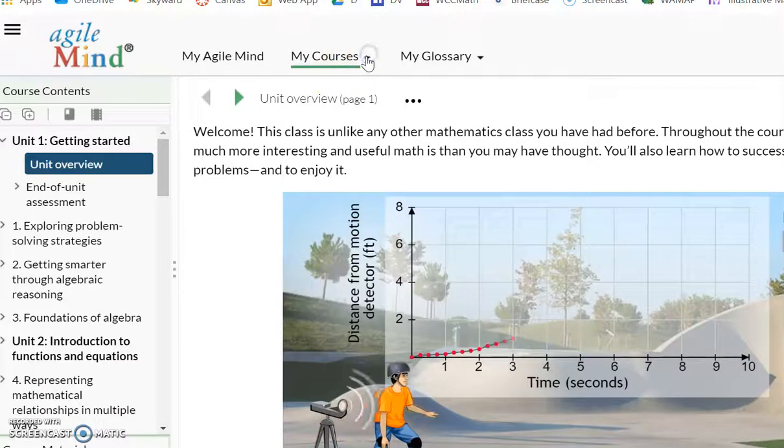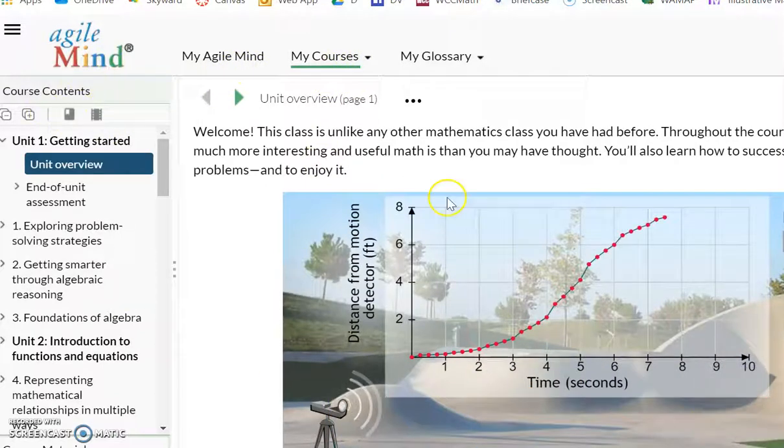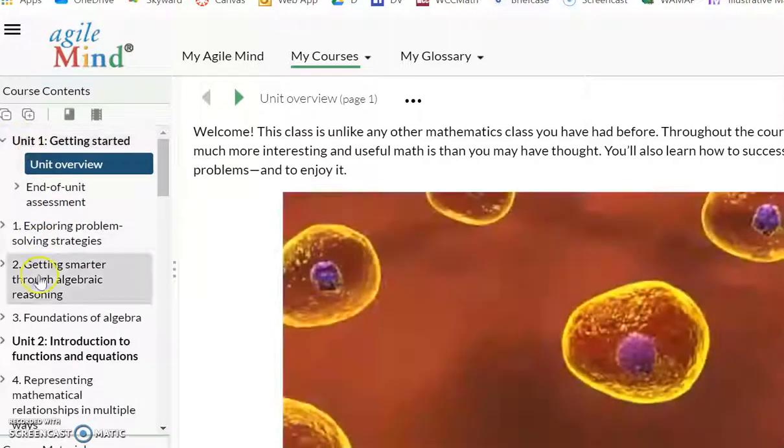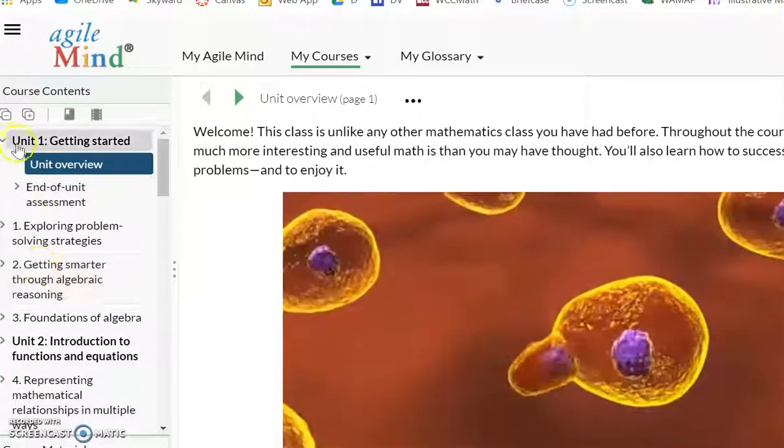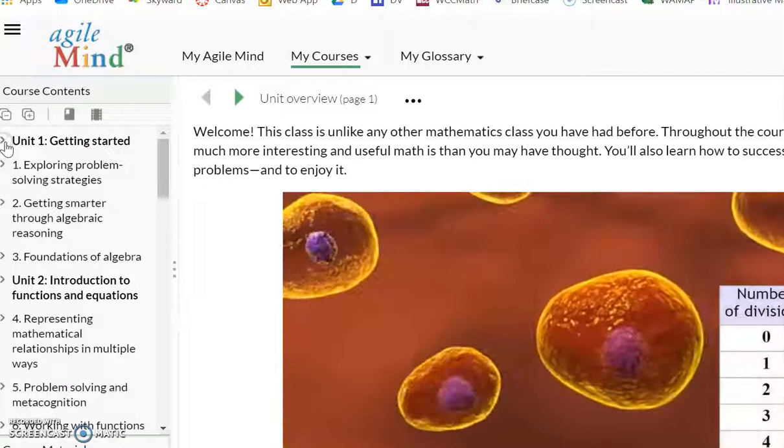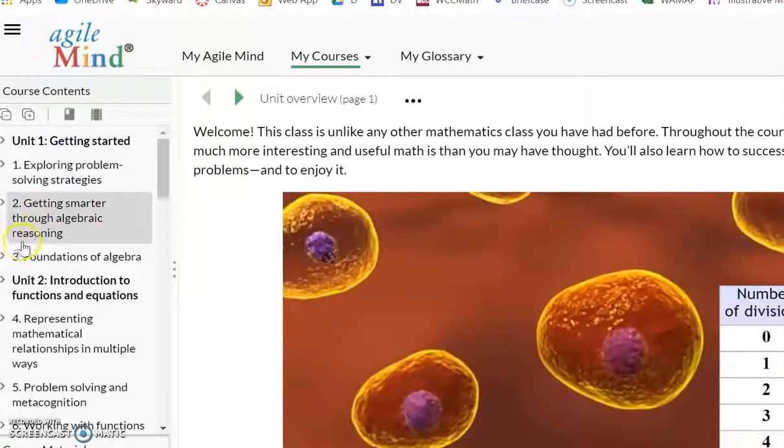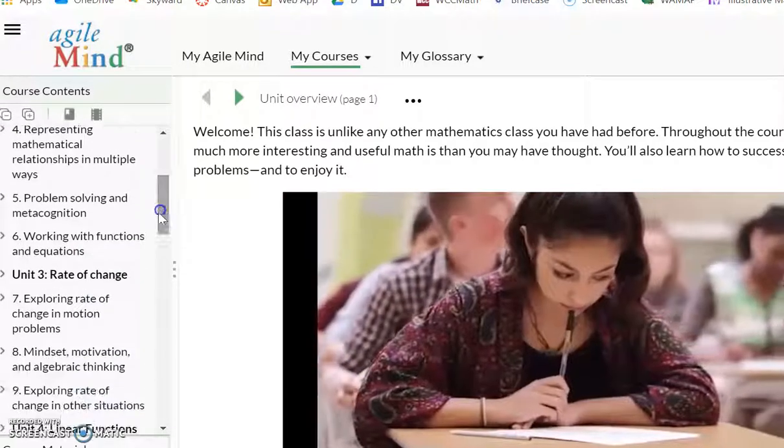Sometimes it'll be a drop-down, sometimes it'll go straight to IA. Notice that we have units and then here's our topics. This will collapse and expand as you can see. If I was missing section 5.3, the assignment for 5.3...